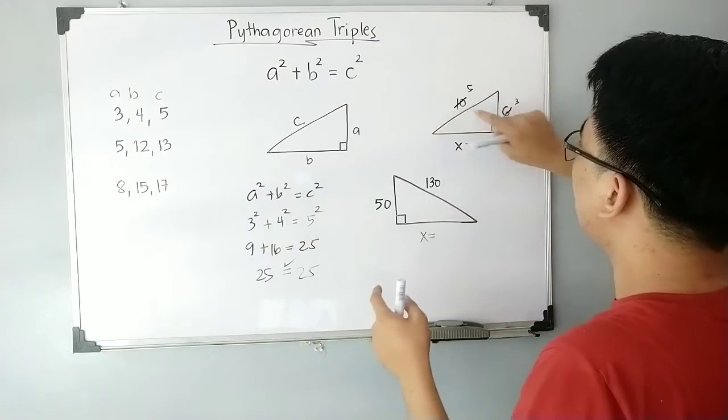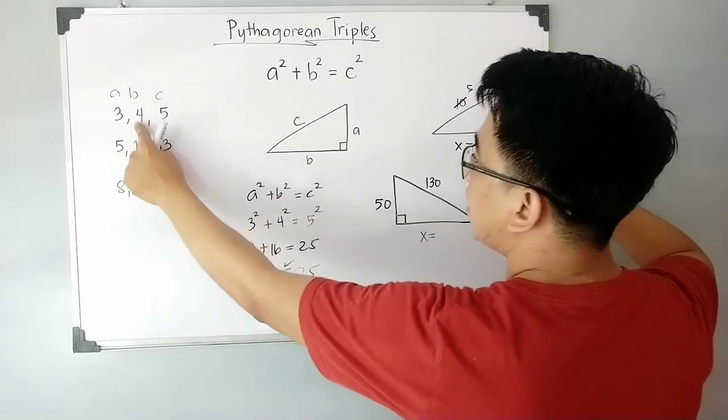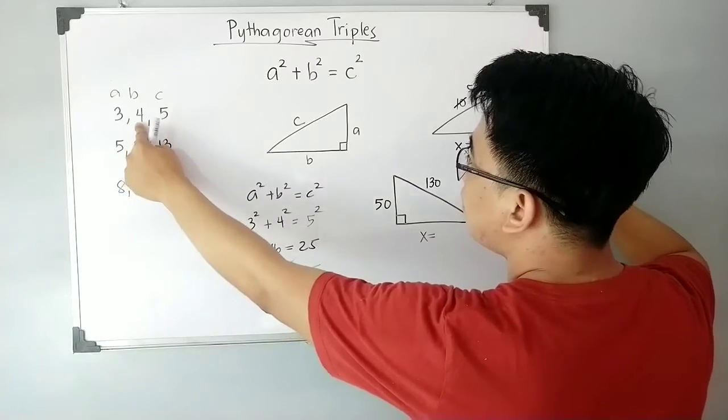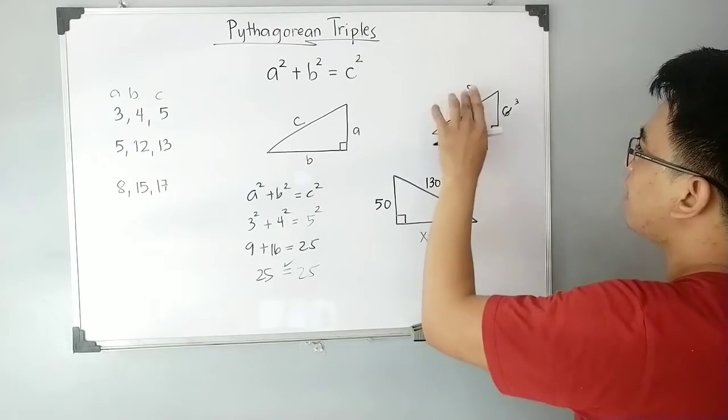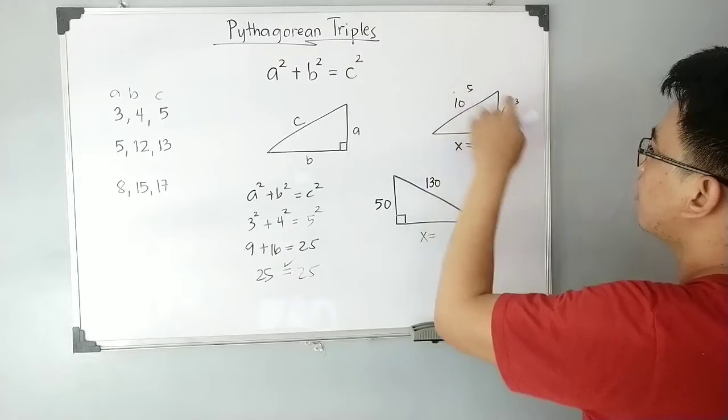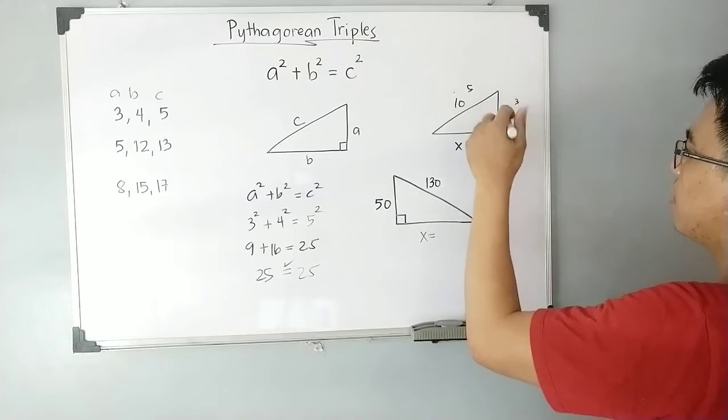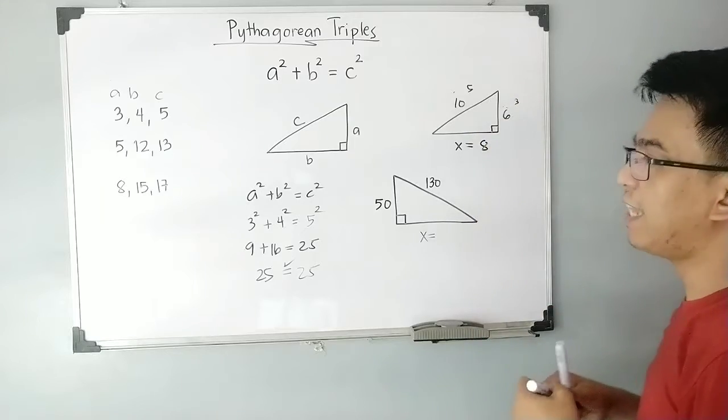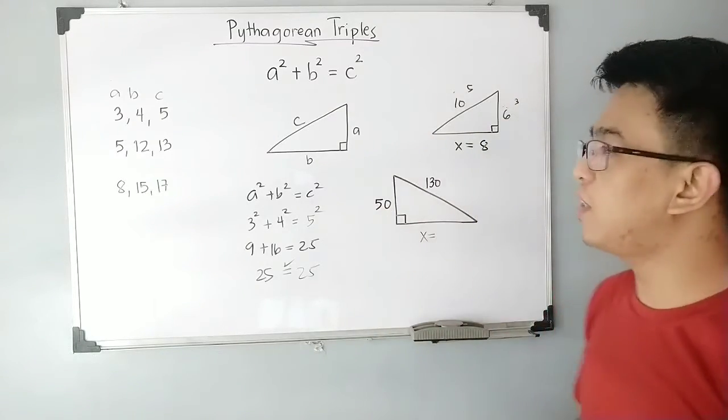...by 2 to make it 6. Now the missing leg is 4, so multiply 4 by 2—that gives you 8. Meaning, the lengths of this right triangle are 6, 8, and 10, without using the Pythagorean formula. Let's move on to item number 2.